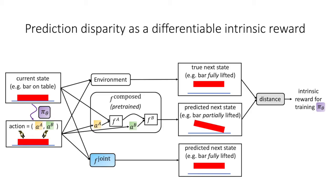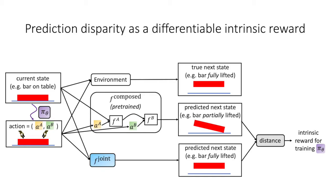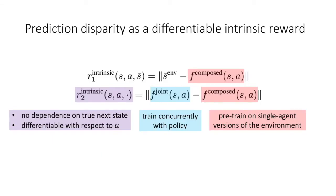Again, this is very different from the compositional prediction, and now we train the policy based on the prediction disparity between the multi-agent and single-agent model predictions. Note that F-joint can be trained concurrently with the policy based on transition data from the environment. Although it requires training another model alongside the policy, the advantage of R2-intrinsic is that it is differentiable with respect to the action taken, assuming one uses differentiable predictors such as neural networks. This can be leveraged to improve the sample complexity of learning the policy.